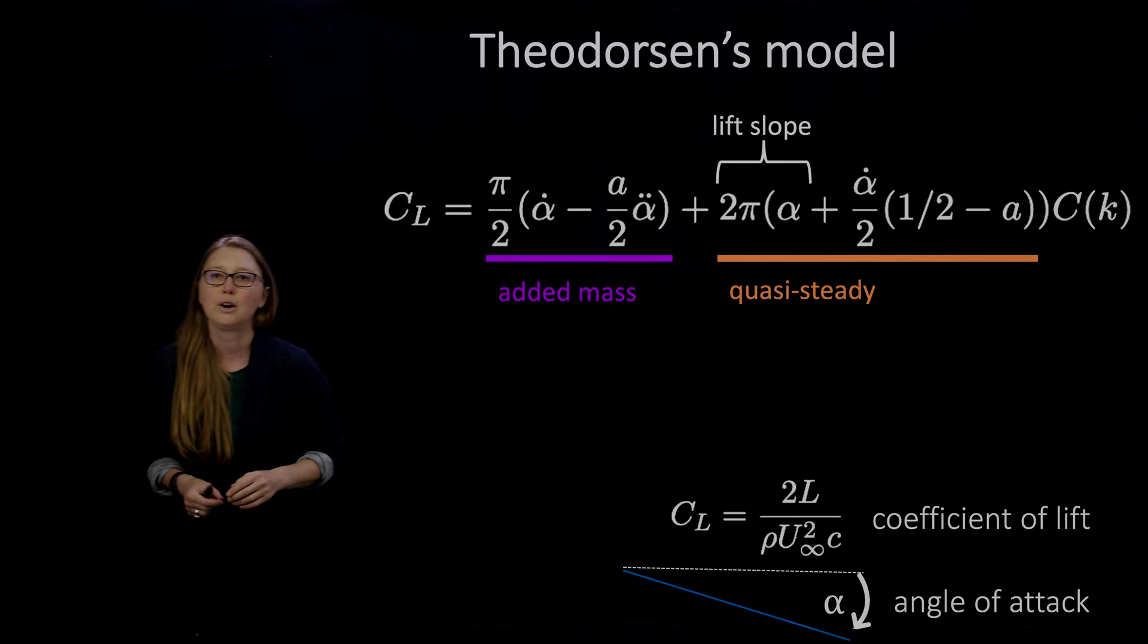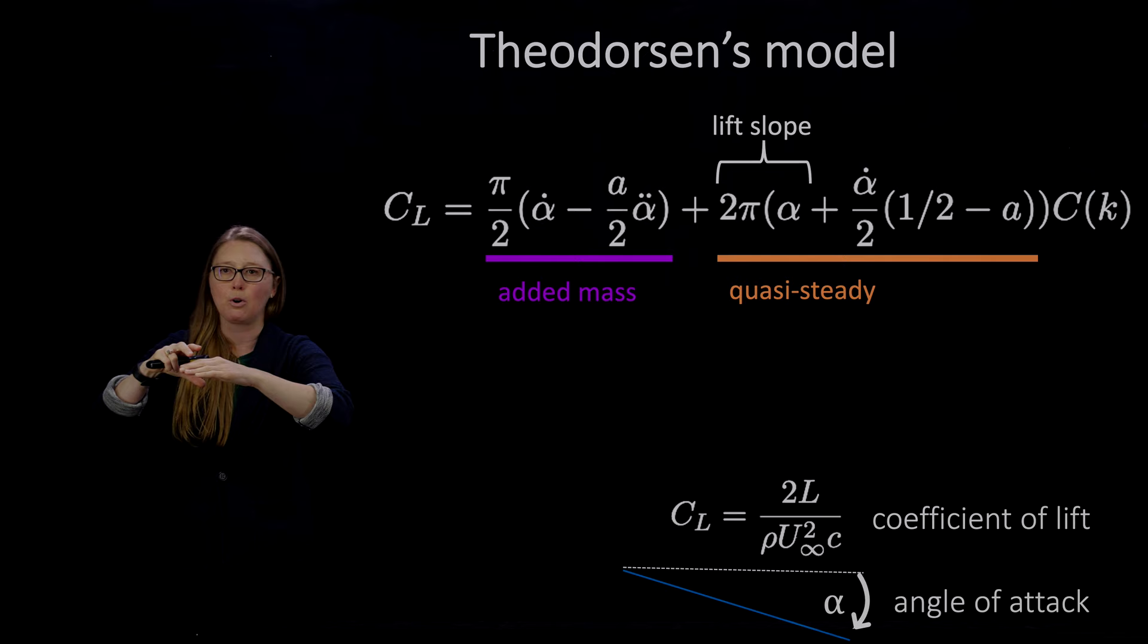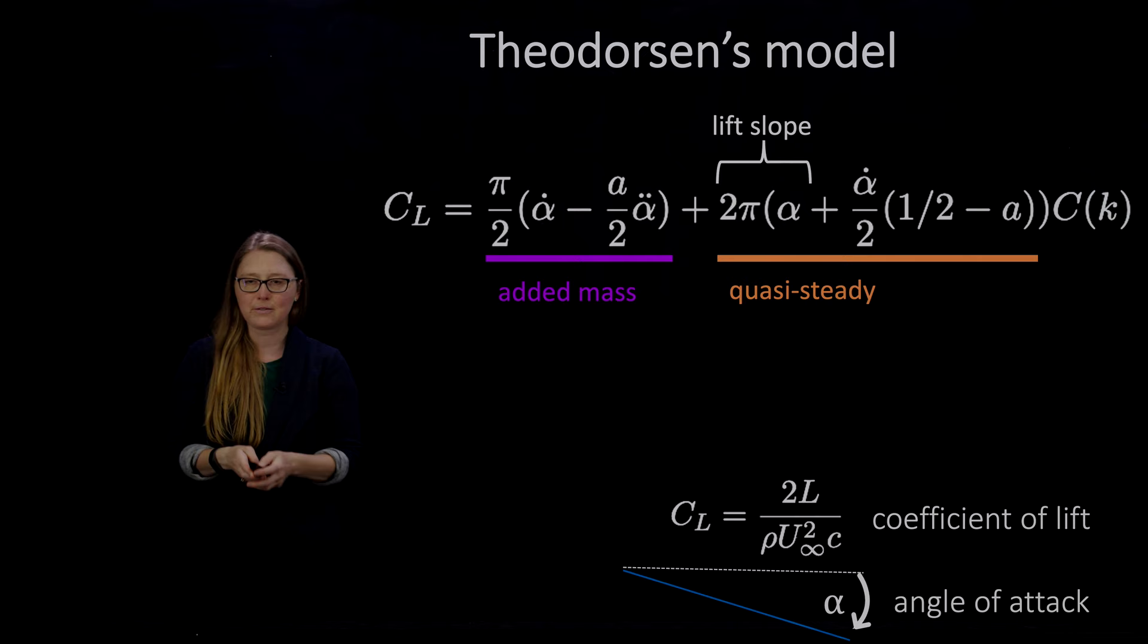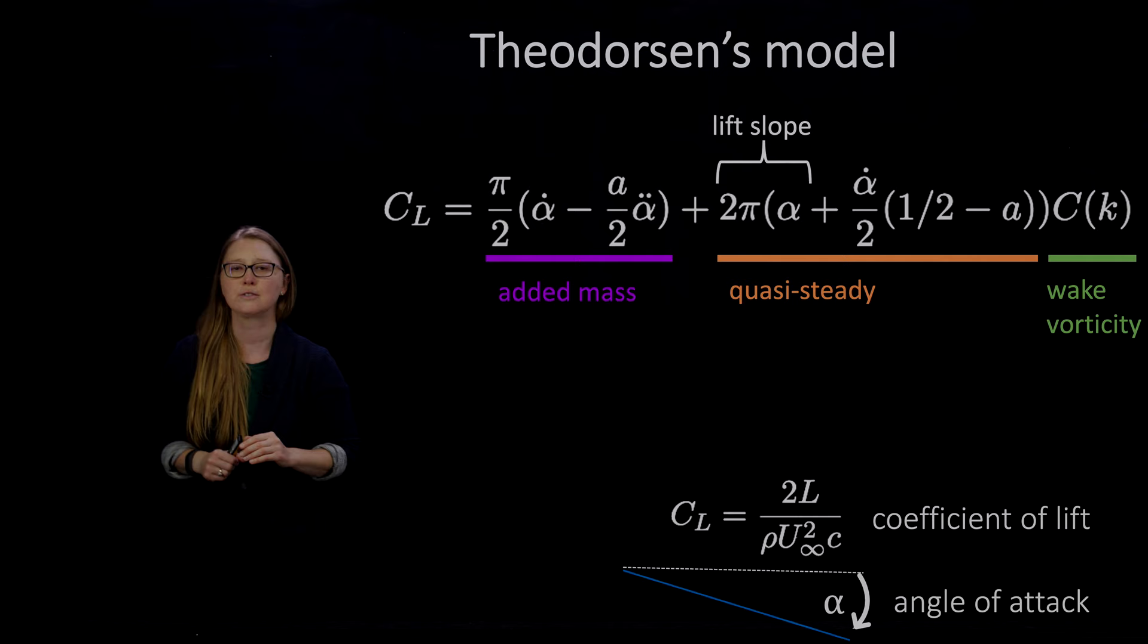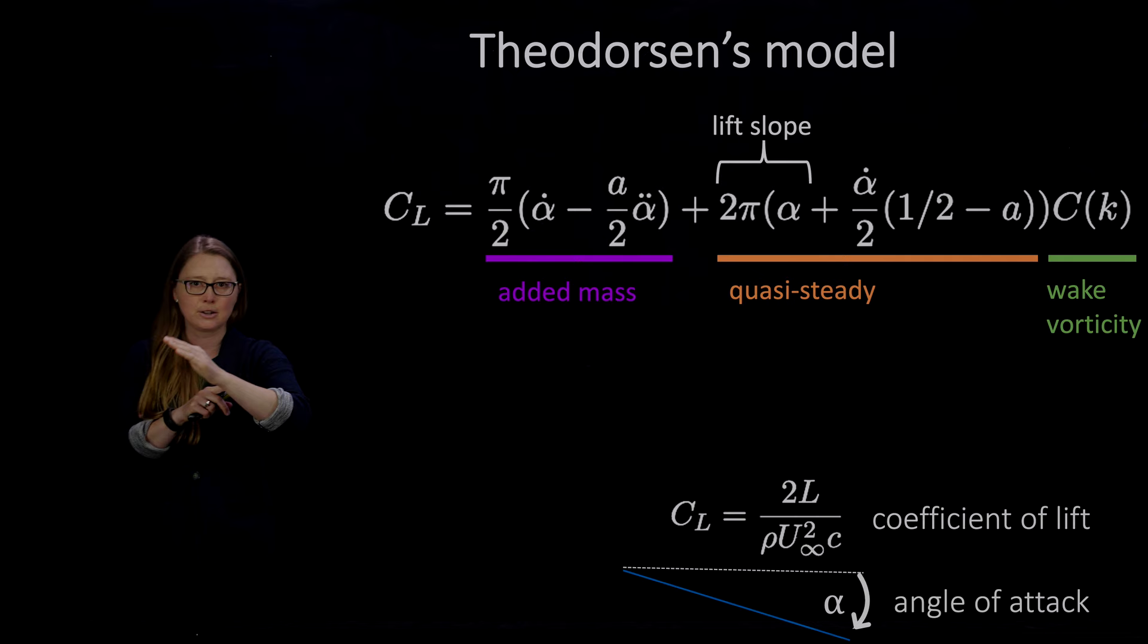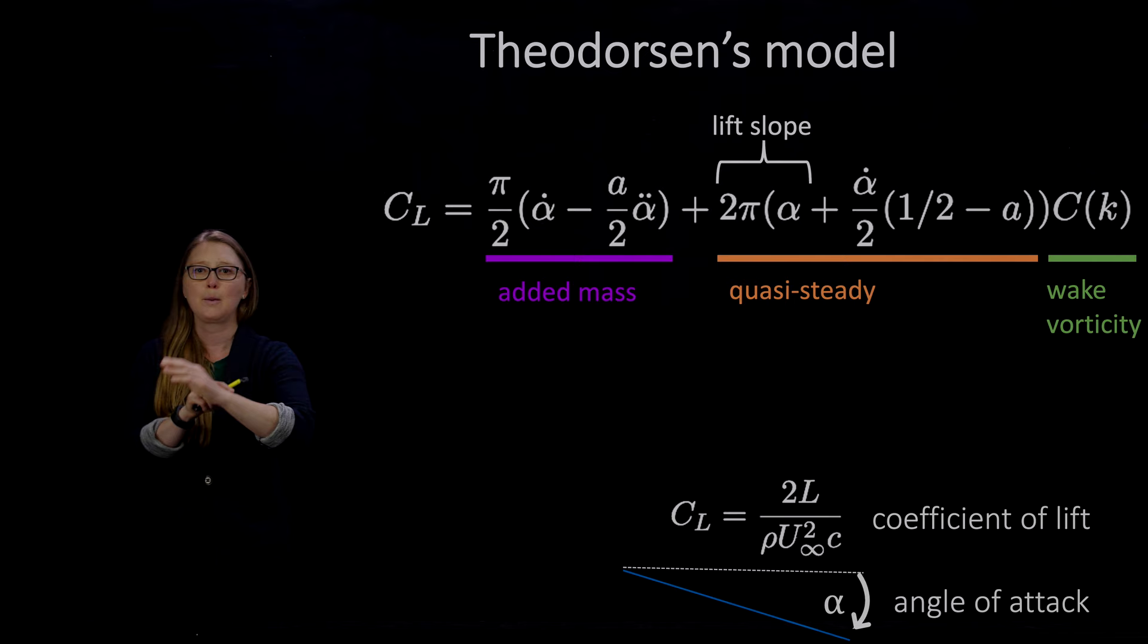So when a structure moves through a fluid, especially when it accelerates through a fluid, it can bring some of the fluid with it. And that's added mass that you have to account for when you think about the forces on the wing. And then we have this mysterious C(k) term. So that's Theodorsen's transfer function. It's a whole mess of Bessel functions. I'm not going to show them to you. That's capturing the wake vorticity. So this model is for a sinusoidally pitching wing. Nice harmonic motion. That k is reduced frequency. It's capturing the frequency at which the wing is pitching. And C(k) will tell you how much the lift is attenuated or enhanced based on that flapping frequency in the wake vorticity.